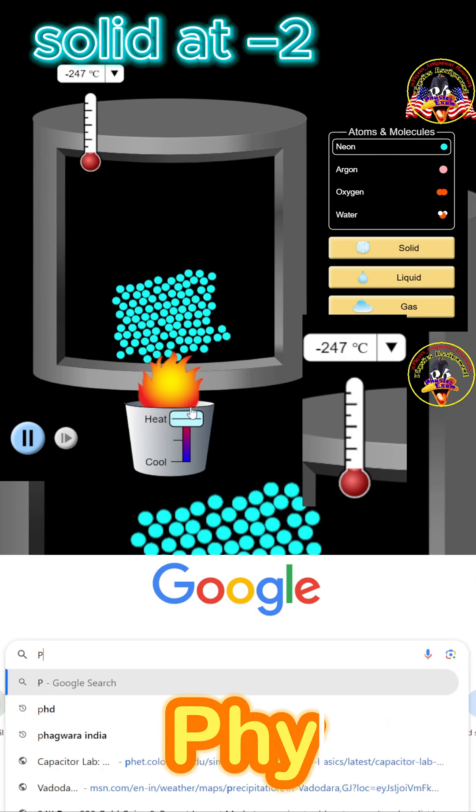Neon becomes solid at minus 259 degrees Celsius and liquid at minus 246 degrees Celsius, turning into a gas by minus 217 degrees Celsius.